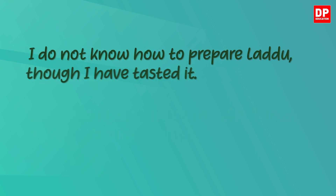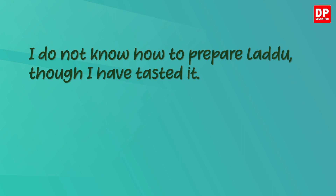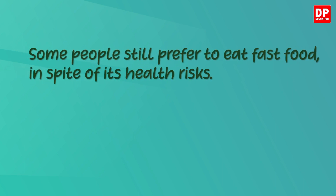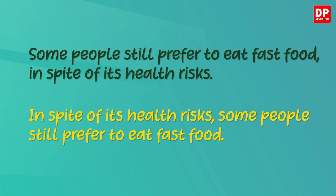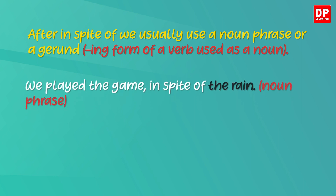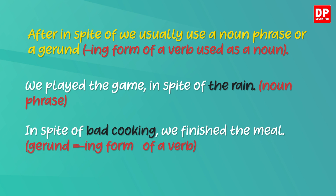Look at the next sentence: 'I do not know how to prepare laddhu though I have tasted it.' You can also write: 'Though I have tasted it, I do not know how to prepare laddhu.' Next, using 'in spite of': 'Some people still prefer to eat fast food in spite of its health risks' — or 'In spite of its health risks, some people still prefer to eat fast food.' Note that after 'in spite of', we usually use a noun phrase or a gerund — the -ing form of a verb used as a noun. For example: 'We play the game in spite of the rain,' or 'In spite of bad cooking, we finish the meal.'